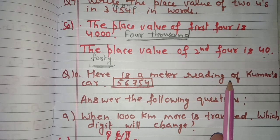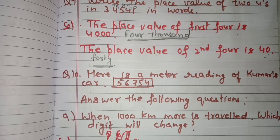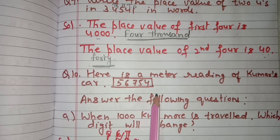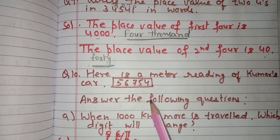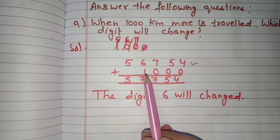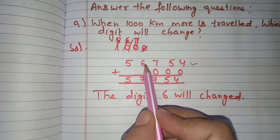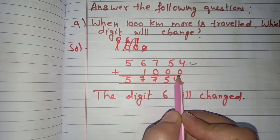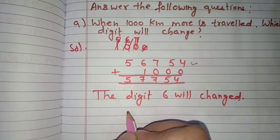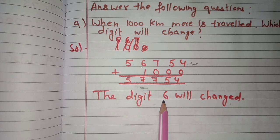The next question: here is a meter reading of Kumar's car — it is 56,754. Answer the following questions. Part a: when 1,000 kilometers more is traveled, which digit will change? We need to add 1,000 to 56,754, which gives 57,754. So digit 6 will change — it will become 7. Digit 6 will be changed if 1,000 kilometers more is traveled.